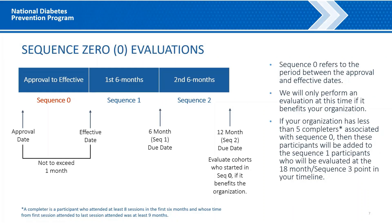Sequence 0 Evaluations. Let's go over the Sequence 0 evaluation in more detail. As previously stated, Sequence 0 is the period between an organization's approval and effective date. We will only perform an evaluation at the 12-month point in the timeline if it benefits the organization — that is, if there are at least five completers associated with the sequence. If the organization has fewer than five completers associated with Sequence 0, then these participants will be added to the Sequence 1 participants who will be evaluated at the 18-month Sequence 3 point in the timeline. A completer is a participant who attended at least eight sessions in the first six months and whose time from the first session attended to the last session attended was at least nine months.